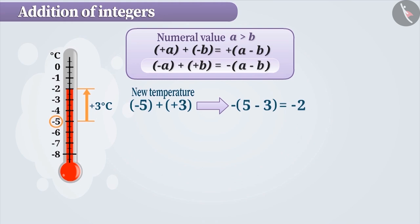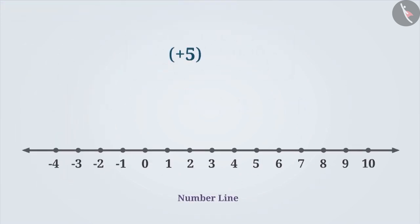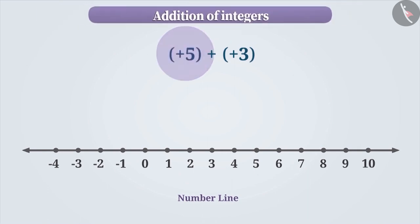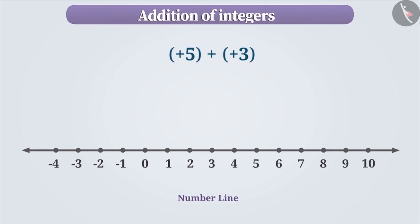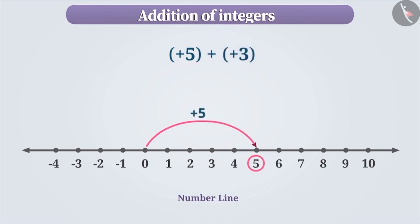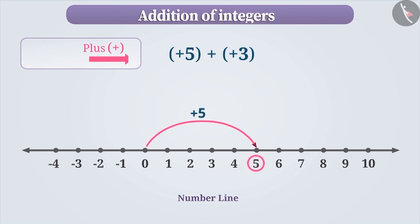Addition of integers can also be done on a number line. To find the value of plus 5 plus plus 3 on a number line, mark plus 5 on the number line first. Since 5 is a positive integer, it is located 5 steps towards the right of 0. While adding 2 integers on a number line, if the sign of the second integer is positive, then move towards the right side of the first integer. If the sign is negative, then move towards the left of the first integer. Since the sign of the second integer is plus, I move 3 steps towards the right of 5. We now arrive at plus 8.